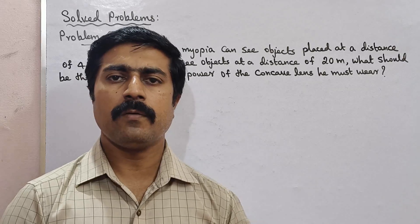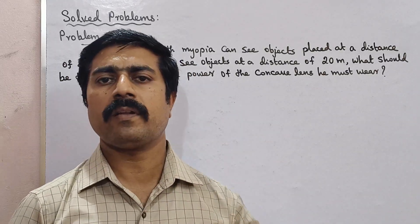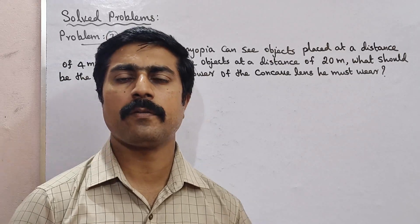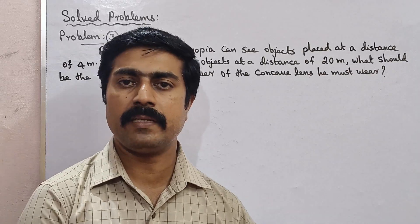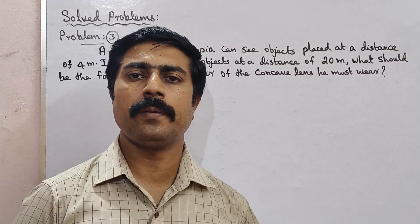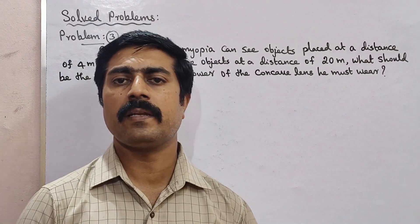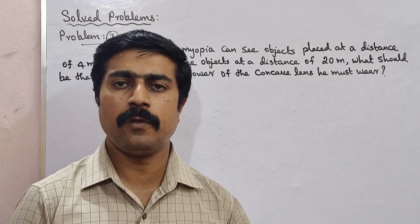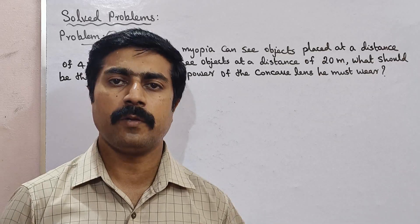Now we know that eye defects have different types: myopia, hypermetropia, presbyopia, and astigmatism. In myopia, nearby objects are easy to see, but distant objects are not clear.